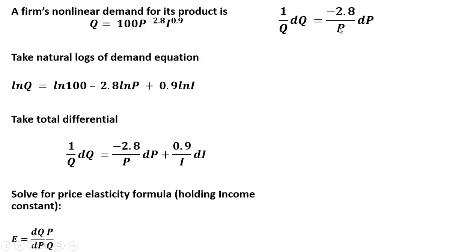Now we're going to solve this for the price elasticity of demand. I'm going to divide both sides through by DP, and I'm going to multiply both sides through by P. That'll give us this format right here. And that'll leave us with this result, price elasticity of demand is minus 2.8.